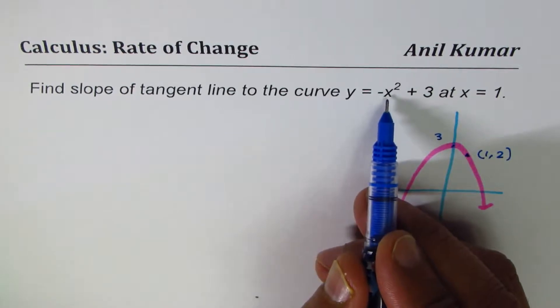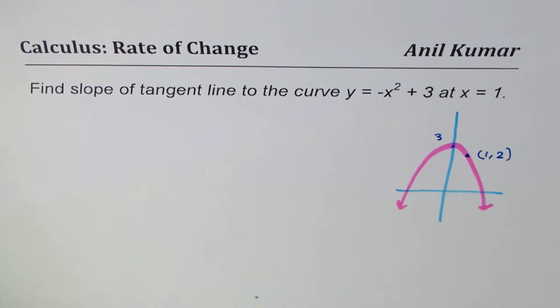You could also substitute 1 here. So if you substitute 1 here, you get -1 + 3 which is 2.